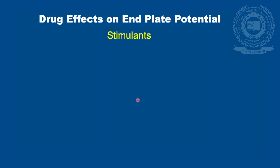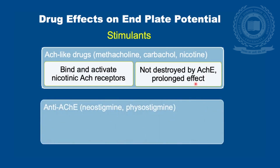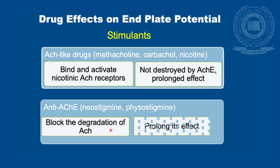The stimulant group of drugs includes acetylcholine-like drugs such as methacholine, carbachol, and nicotine. These bind and activate the nicotinic acetylcholine receptors and are not destroyed by the acetylcholinesterase enzyme, so they have a prolonged effect. Anti-acetylcholinesterase drugs such as neostigmine and physostigmine block the degradation of acetylcholine, also leading to prolongation of its effect.